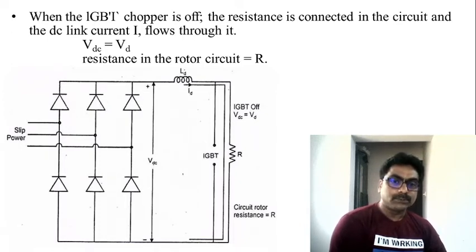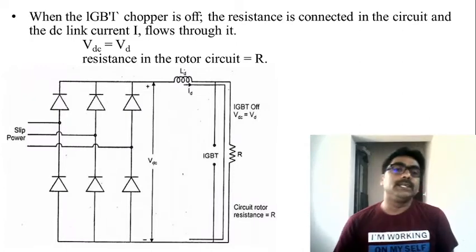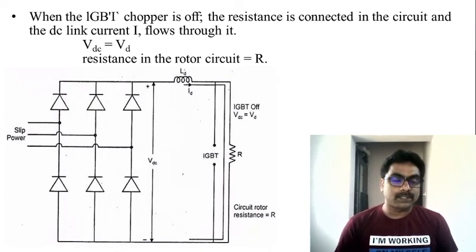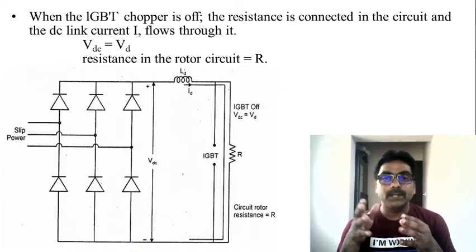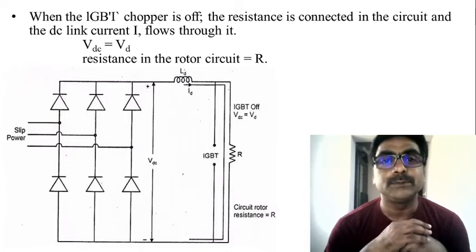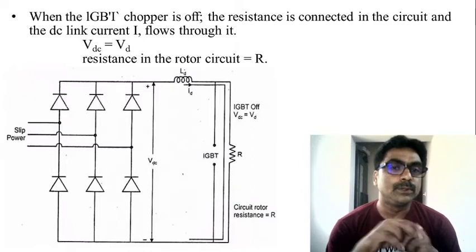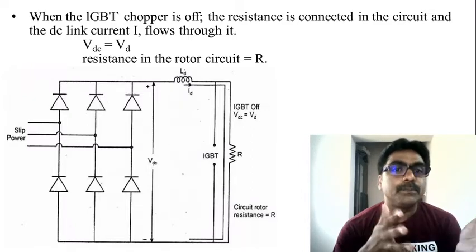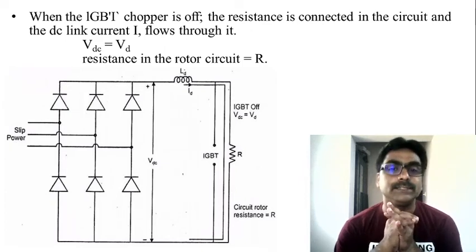When the switch is OFF, the current flows through the resistor and the voltage that appears across the diode rectifier output appears across the resistor. Here the rotor resistance is now equal to R — the resistor we are connecting across the circuit. The total resistance is R, and the voltage across the resistor is V_DC, so V_D equals V_DC.